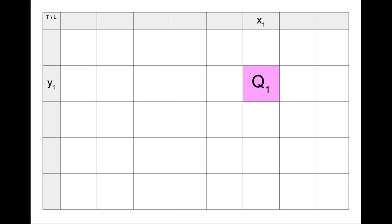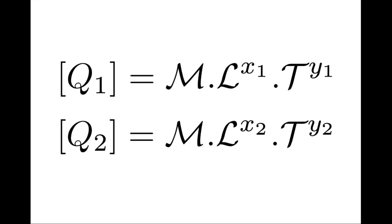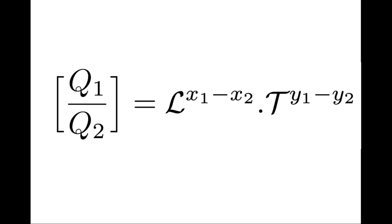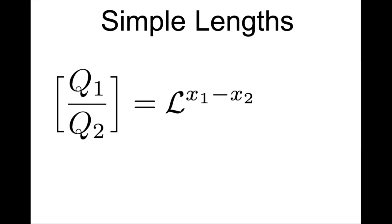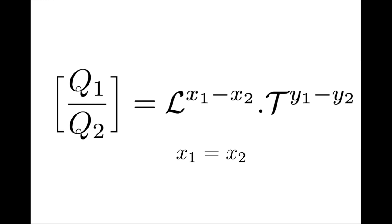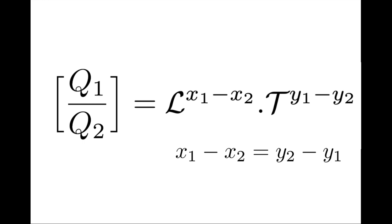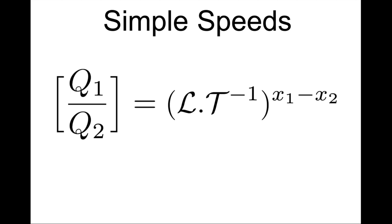Just as in the previous episodes, we start with an arbitrary quantity q1 in the table, with space exponent x1 and time exponent y1. We then pick a second arbitrary quantity q2 with exponents x2 and y2. The mass dimension cancels out; the ratio is purely kinematic. This general formula includes simple lengths when y1 equals y2, simple times when x1 equals x2, and simple speeds in the case where x1 minus x2 equals y2 minus y1, so the space or time exponents can be factored out.